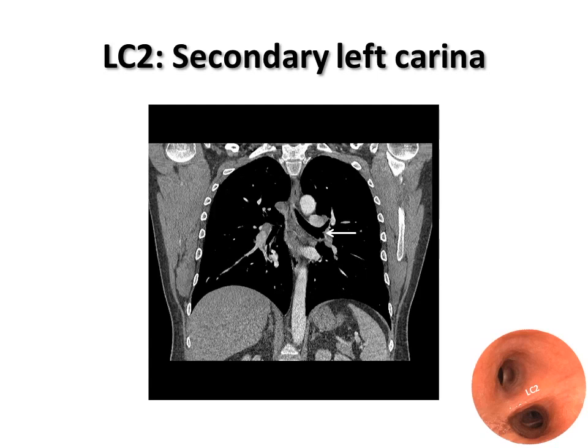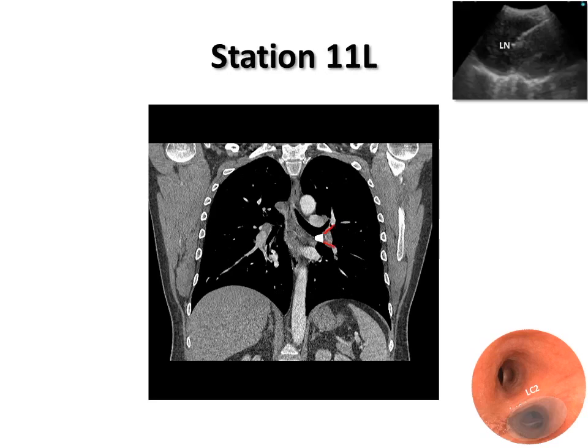Here we are starting our survey at station 11L. Station 11L refers to lymph nodes located between the left upper lobe and the left lower lobe. The eBus scope is in the proximal part of the left lower lobe bronchus at the level of LC2. The transducer is oriented laterally toward the left.